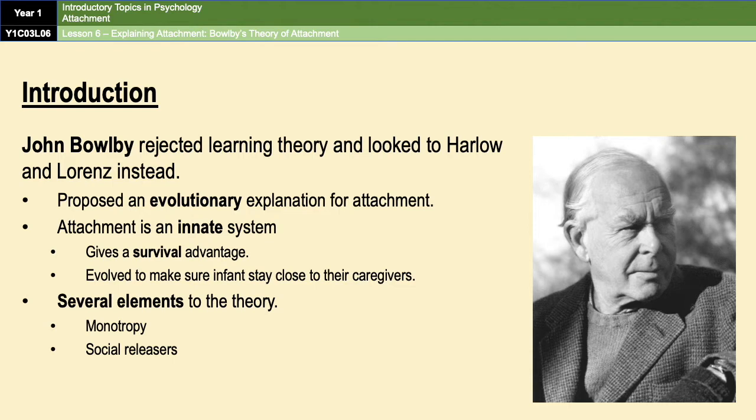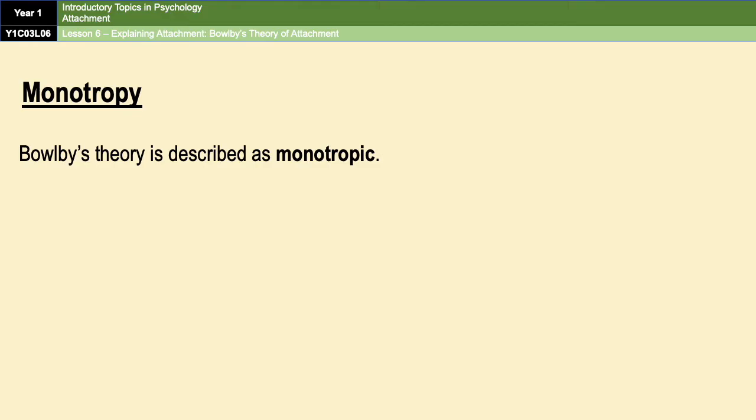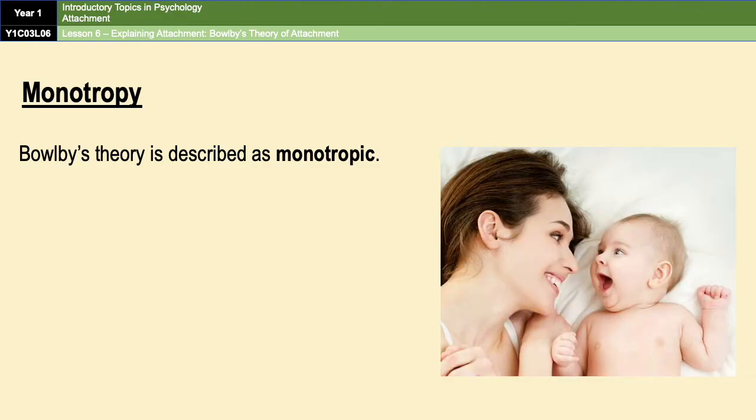There are several elements to the theory: monotropy, social releasers, critical periods, and the internal working model. Bowlby's theory is often described as monotropic because he placed a huge emphasis on a child's attachment to one particular caregiver, believing that attachment was different and more important than any other attachment they would form in their lives.